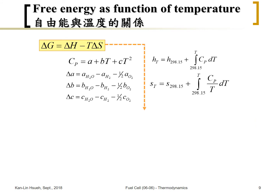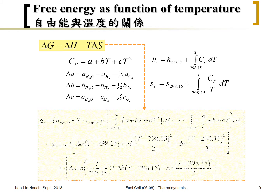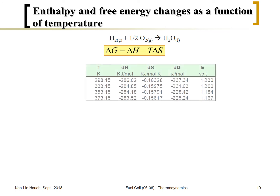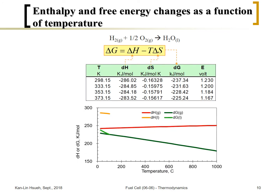Once we have both the enthalpy change ΔH and entropy change ΔS, we can calculate the free energy change ΔG from the equation ΔG = ΔH − TΔS. The free energy at standard conditions is known, and then we add the ΔH term and subtract the TΔS term to get the free energy at any other temperature. If you know the free energy at another temperature, you can then calculate the cell voltage. I plot ΔH and ΔG as a function of temperature on this slide.